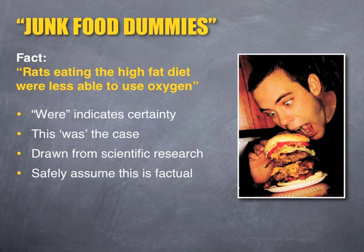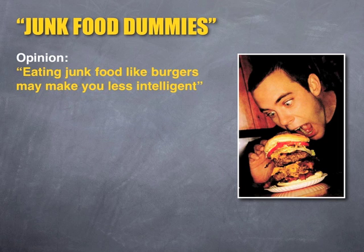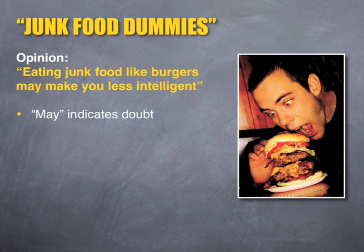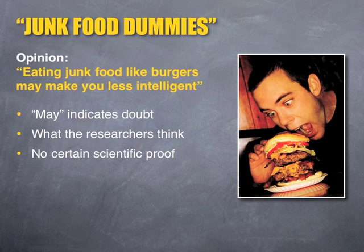But not all of this article is factual. An example of an opinion from paragraph 3 is: 'eating junk food like burgers may make you less intelligent.' If we look closely at the writer's language, we can easily identify this as an opinion and not a fact. Brook says that burgers 'may' make you less intelligent — the verb 'may' shows that it might happen, not that it will for certain. There is no actual scientific proof given to back up the effect of junk food on people, and along with the uncertainty in Brook's language, this tells us it is not factual but instead one of his opinions.